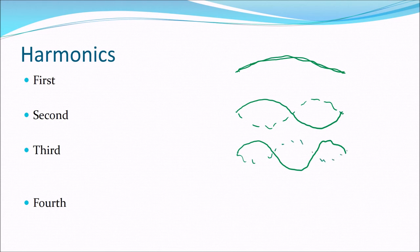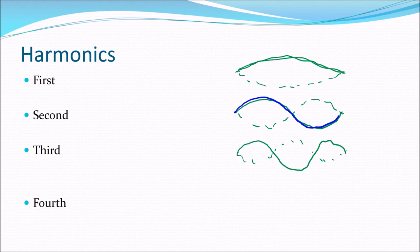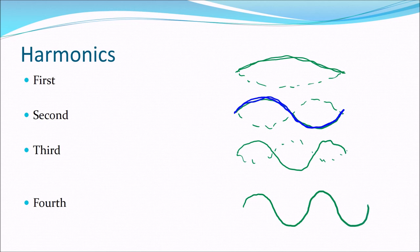The fourth harmonic will have four loops. In these pictures, one side is drawn solid and the other dotted to help remember that it's the same string vibrating back and forth, and that one wavelength has one crest and one trough, meaning two loops. The fourth harmonic contains two wavelengths.